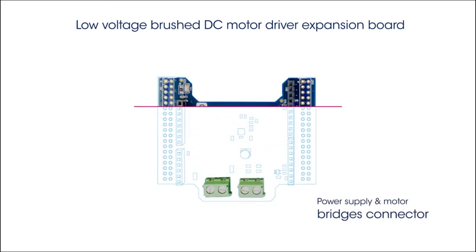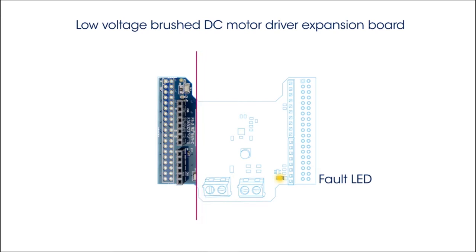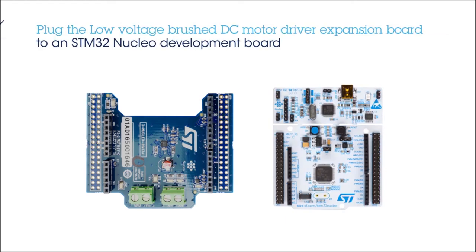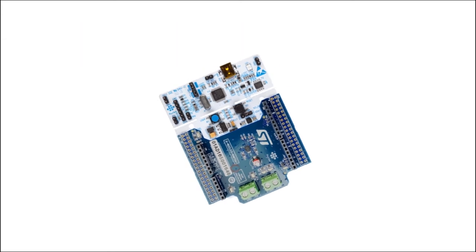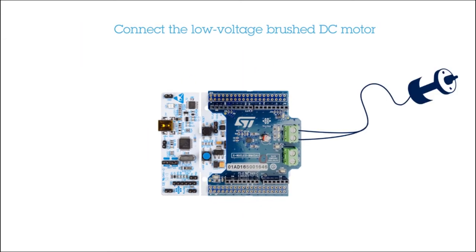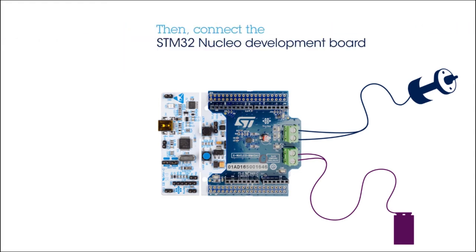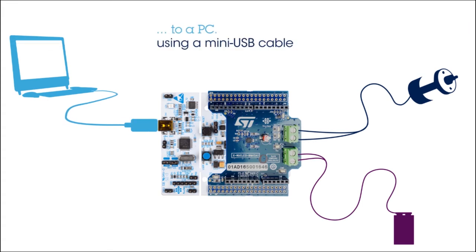It has a power supply and motor connector, and a fault LED to check the alarms reported by the STSpin250. Plug the expansion board into an STM32 Nucleo Development Board. First, connect a low-voltage brush DC motor to the A plus or minus connector. Then connect a low-voltage supply, for example a 9-volt battery. Next, connect the STM32 Nucleo Development Board to a PC using a mini-USB cable.